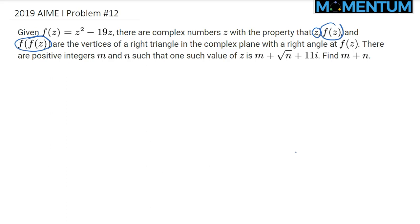they form a right triangle, where the right angle is at the vertex F of Z. So basically you have something like this. Maybe Z is here, and then F of Z is here, let's draw it a little bit smaller so we have enough space. Anyhow, something like that, if you will.